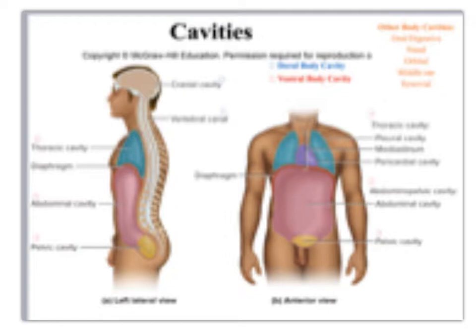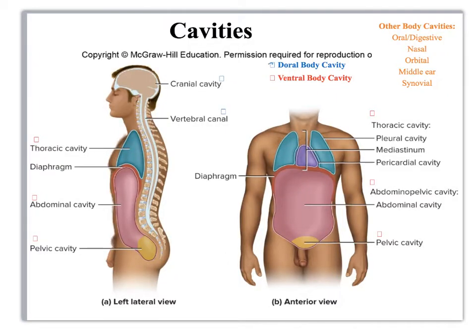Looking at the body cavities, we're going to divide them up into dorsal and ventral body cavities. So this is one of those places where we use dorsal and ventral instead of anterior or posterior. The dorsal body cavity has two sections: one, the cranial cavity, and two, the vertebral cavity. Within the cranial you have only the brain, and within the vertebral you have the spinal cord.